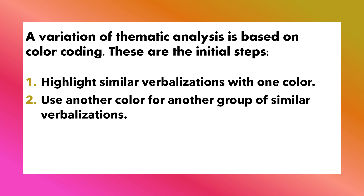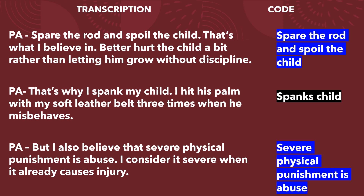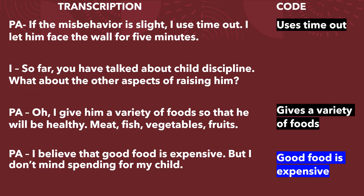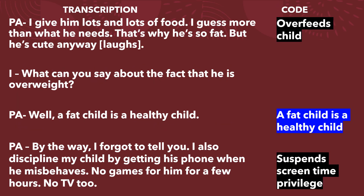A variation of thematic analysis is based on color coding. The initial steps: highlight similar verbalizations with one color, and use another color for another group of similar verbalizations. Let's go back to the transcript file and focus on the codes. We'll first categorize the codes into beliefs or practices. I have chosen blue highlight for beliefs and black highlight for practices. Spare the rod and spoil the child — belief, so that will be blue. Spanks child — practice, so that's black. Severe physical punishment is abuse — belief, so it is blue. Uses timeout — practice, so that's black. Gives a variety of foods — practice, so it's black. Good food is expensive — belief, so highlighted blue. Overfeeds child — practice, so that's black. A fat child is a healthy child — belief, so it's blue. And suspends screen time privilege — practice, so it's black.